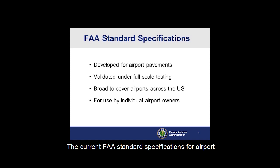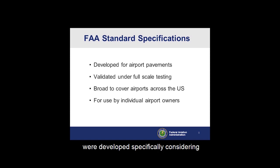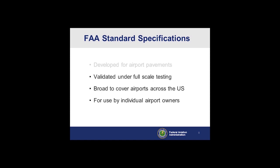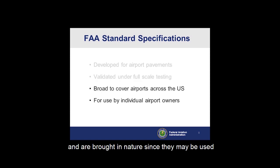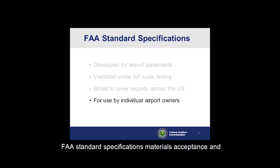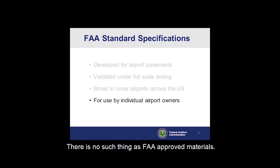The current FAA standard specifications for airport construction, Advisory Circular AC 150-5370-10, were developed specifically considering aircraft loadings. These specifications have been validated under full-scale aircraft load testing and are broad in nature since they may be used throughout the United States. FAA standard specifications for materials, acceptance, and testing is on a project-to-project basis. Note: there is no such thing as FAA-approved materials.